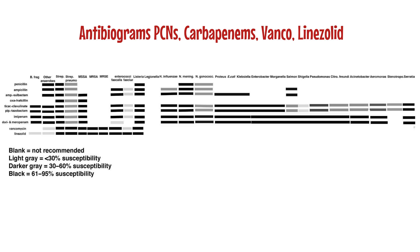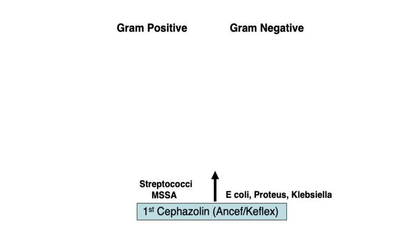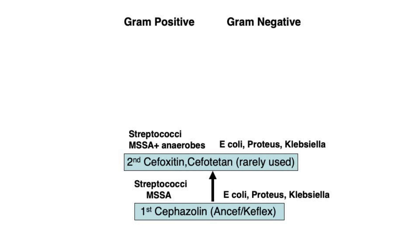Now let's look at the cephalosporin ladder. Whenever possible, cephalosporins should be prescribed because they are the safest class of antibiotics, being associated with the lowest number of adverse reactions. The first cephalosporin developed was cefazolin, trade name Ancef. This agent covers MSSA, streptococci, and a moderate number of E. coli, Proteus, and Klebsiella. The oral preparation, Keflex, is well absorbed. These first-generation cephalosporins are the treatment of choice for many soft tissue infections. The second generation of cephalosporins are now rarely used because the only addition to their bacterial spectrum was anaerobic bacteria.